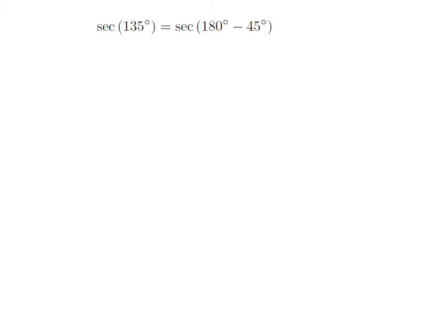As 135 degree is equal to 180 degree minus 45 degree, so secant of 135 degree is equal to secant of 180 degree minus 45 degree.